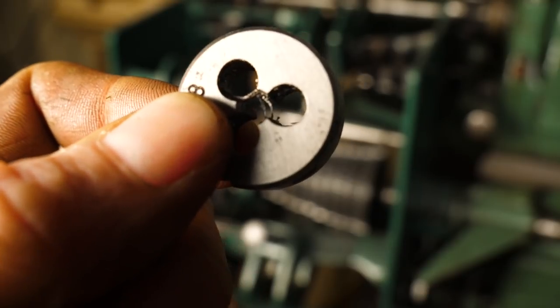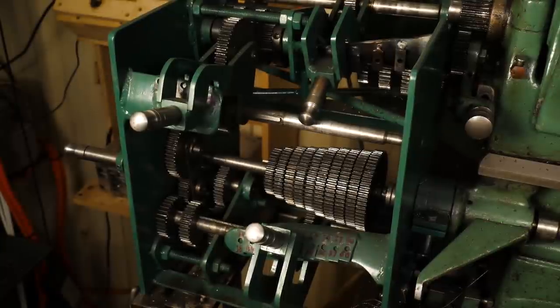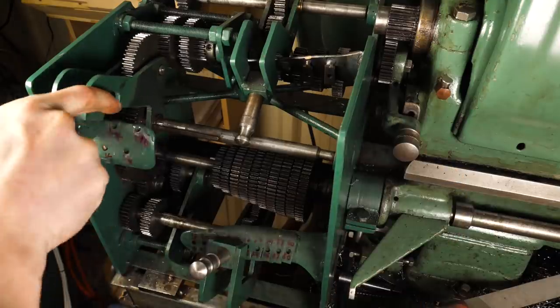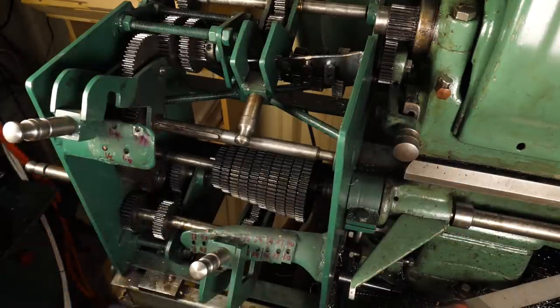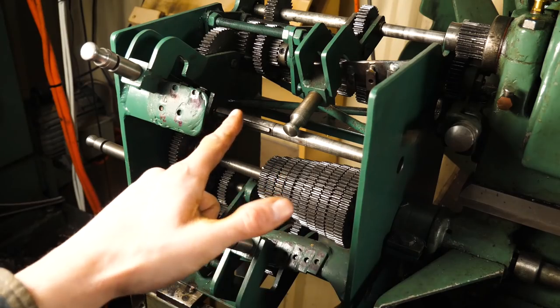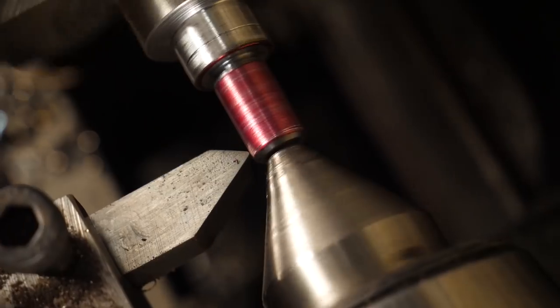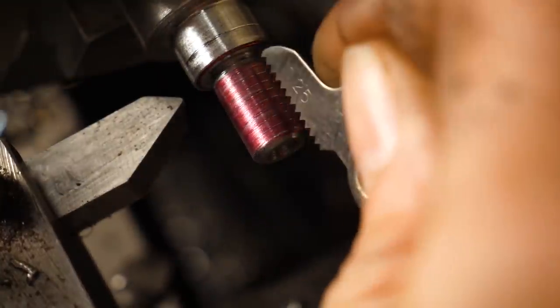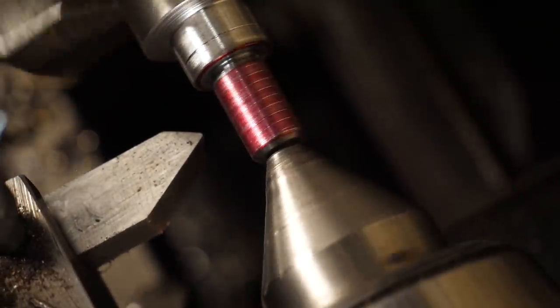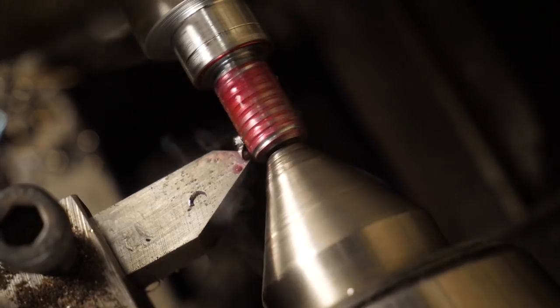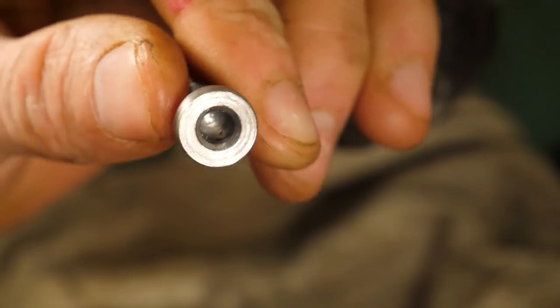To cut this thread we could use a die. Or we use our quick change gearbox. Side note. I plan to do a narrated series of the quick change gearbox at some point soon. Stay tuned. Got our fastener.